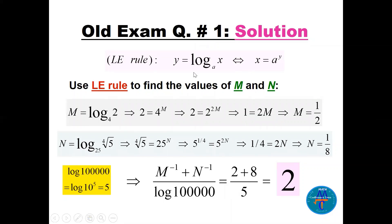Remember the LE rule where we convert a logarithmic equation into exponential form. Here, M equals log base 4 of 2. Using the LE rule: 2 equals 4 to the power M. Since 4 equals 2 squared, we have the same base on both sides, so 1 equals 2M, giving M equals one half.